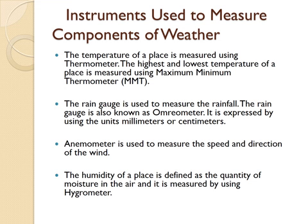The next is the anemometer. Anemometer is used to measure the speed and direction of the wind. The humidity of a place is defined as the quantity of moisture in the air, and it is measured by using a hygrometer. Hygrometer is the name of the instrument used to measure the humidity.